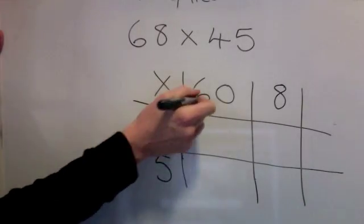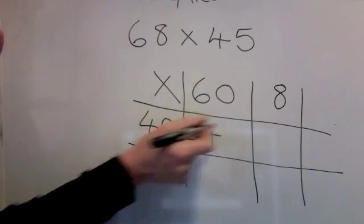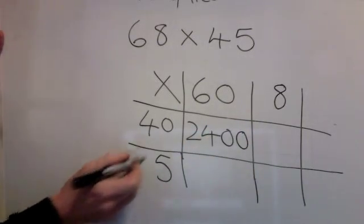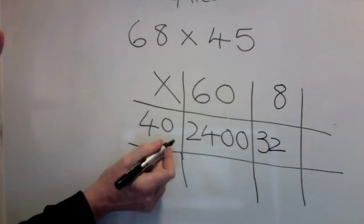4 times 6 is 24, one, zero, two zeros, one, two. 4 times 8 is 32, one, zero, one, zero.